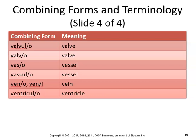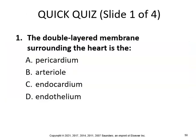Ven means vein — venous pertains to the veins. Ventriculotomy is incision of the ventricle of the heart, and the interventricular septum is the wall separating the ventricles. Quick quiz: the double-layered membrane surrounding the heart is the pericardium.